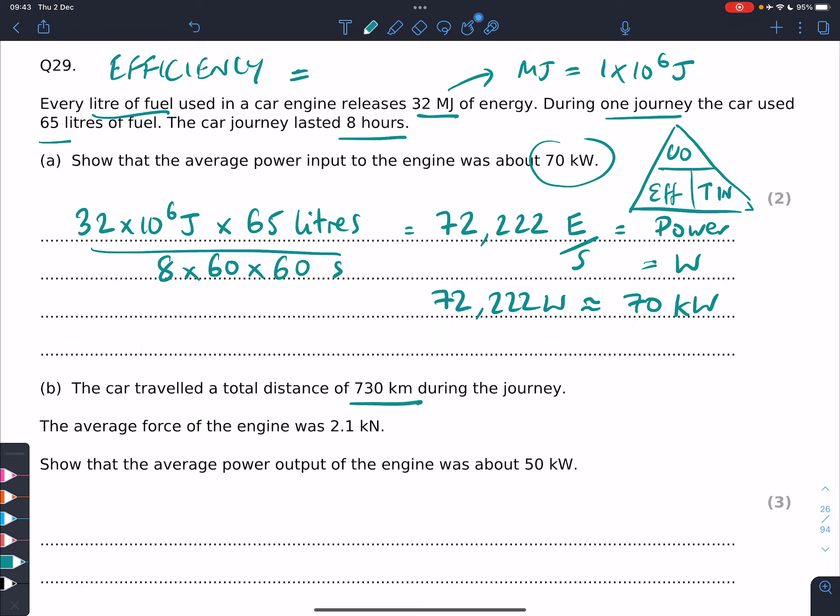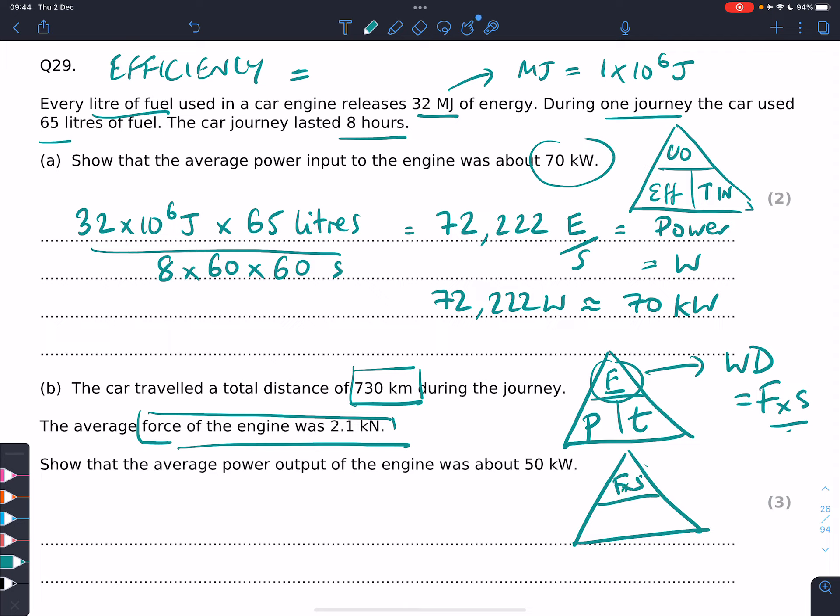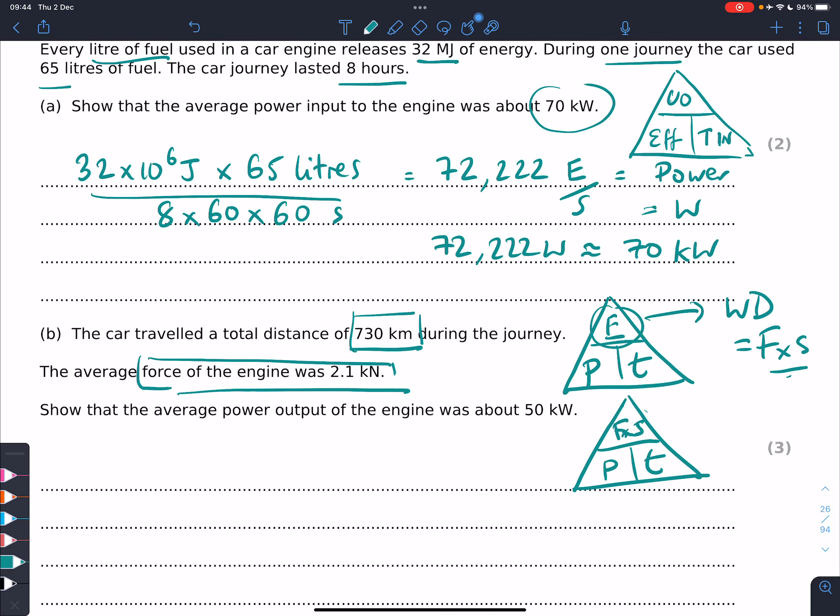The car travelled a total distance of 730 kilometres. At this stage it's worth giving you a couple of triangles. If you've got power, energy, and time, you can also say that when we're talking about moving a certain distance with a force happening, we'll use work done instead of energy. Work done equals force times distance. You can have a mega triangle where you've got force times distance at the top and power times time on the bottom. Force times distance, which equals work done, divided by time, gives us the power output.